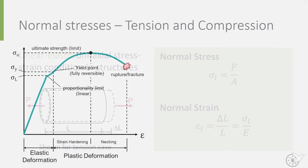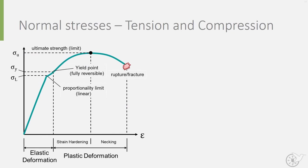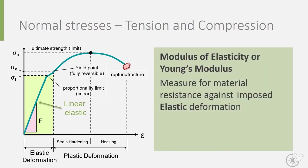If we then again look at the stress-strain curve, we can now define the linear slope in the diagram. This slope is known as the modulus of elasticity, or Young's modulus, and is known as the measure of material resistance against imposed elastic deformation. Mathematically, it is defined as the normal stress sigma over the normal strain epsilon.